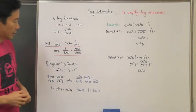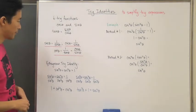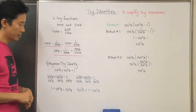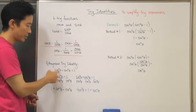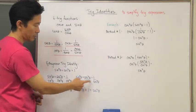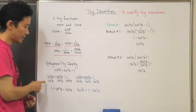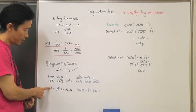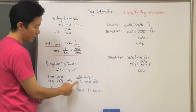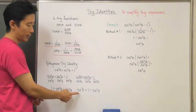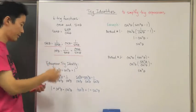There are two other Pythagorean identities you need to know, and they are derived simply by dividing both sides of the original identity by either sine squared theta or cosine squared theta. Dividing by sine squared theta gives: one plus cotangent squared theta equals cosecant squared theta. Dividing by cosine squared theta gives: tangent squared theta plus one equals secant squared theta.